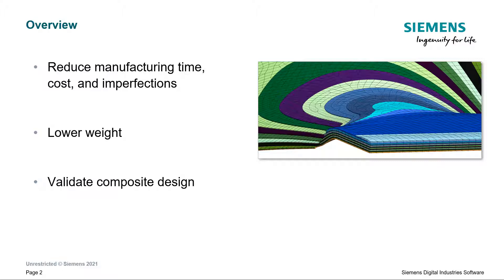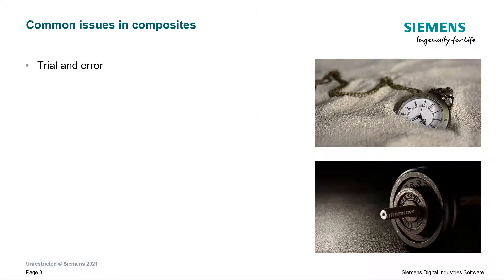We can also validate the design before it's manufactured. Some common issues in composites include being very time-consuming — it takes a lot of trial and error to get parts right. There are mistakes in the flat pattern cutouts, which result in wasted material and time, and there are imperfections during manufacturing.